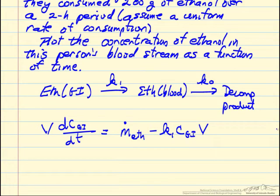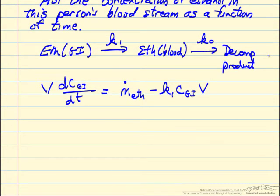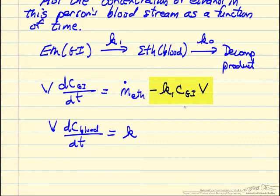In the second mass balance, namely a mass balance on the bloodstream, again the volume times the change in concentration of ethanol in the blood with respect to time. There's no flow in for any mass flow, but all of the ethanol that's disappearing from the GI tract is now appearing in the bloodstream, and then it's reacting in the zero order reaction times the volume of reaction.